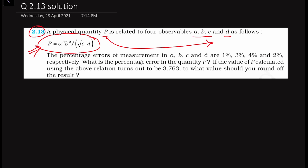The percentage error in the measurements of A, B, C, and D are: 1% for A, 3% for B, 4% for C, and 2% for D. These are the given percentage errors in the measurement. What we have to find is the total percentage error in the quantity P.